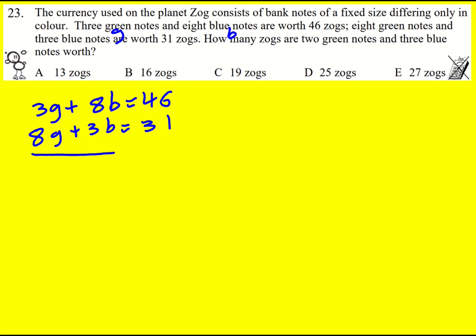What we can do instead is actually add them together directly, because the nice thing that happens here is that we get 11g plus 11b equals 77. Straight away we get that g plus b is going to be 7. That's really nice.